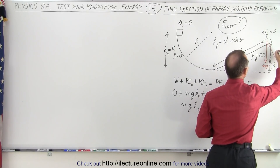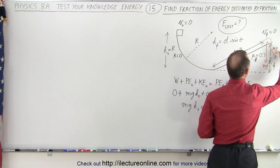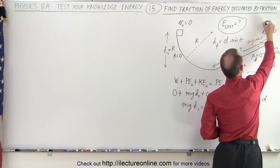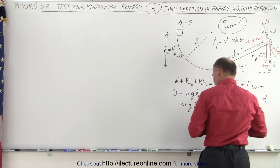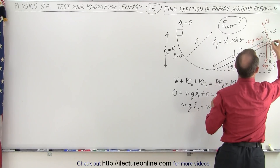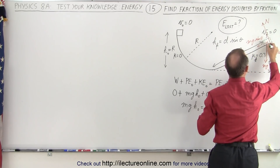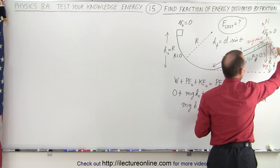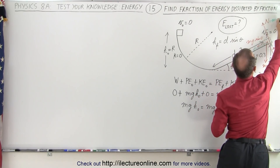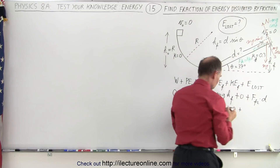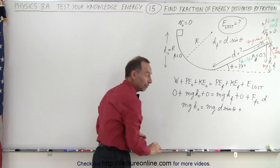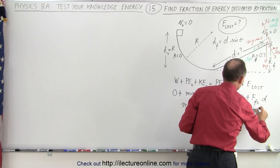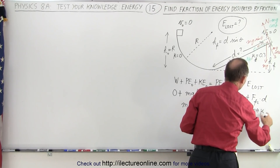We have mg·cos(θ) as the component perpendicular to the incline, mg·sin(θ) along the incline, and of course we have the normal force pushing back. Then we have the friction force acting down the ramp. The friction force equals the normal force times mu, and the normal force on the incline is mg·cos(θ). So the friction force is mg·cos(θ) times mu, times d.